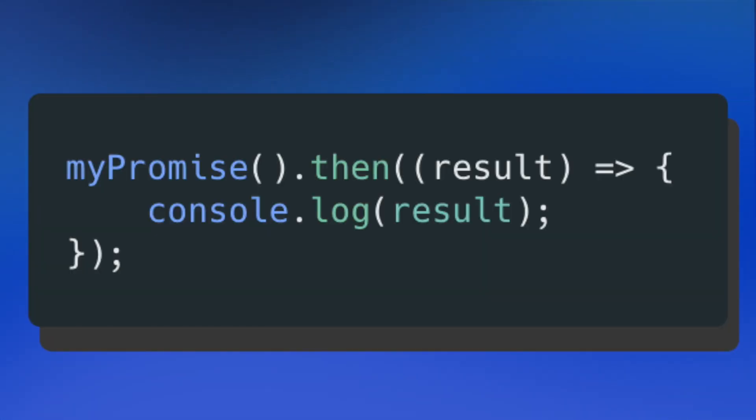In this code block, you can see my promise function being called and then I use the then method to get the internal data that was resolved inside our promise. What I love so much about async functions is that they allow you to write asynchronous code like promises, but they don't veer far away from how you would typically write synchronous functions. And my love for async doesn't stop there, because there's a companion keyword called await that allows you to handle resolved data in a very satisfying way.